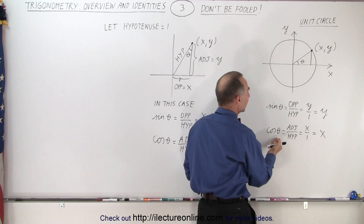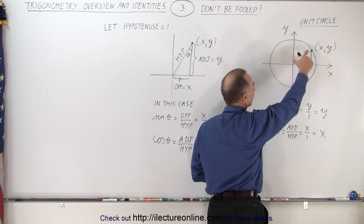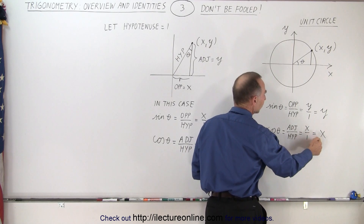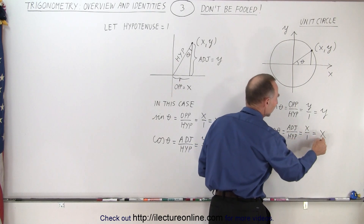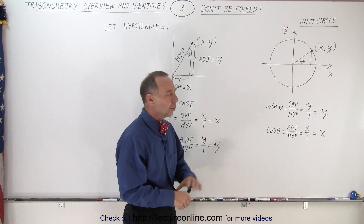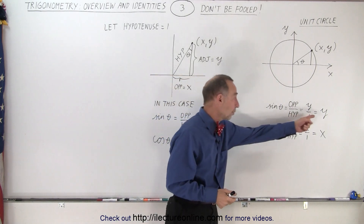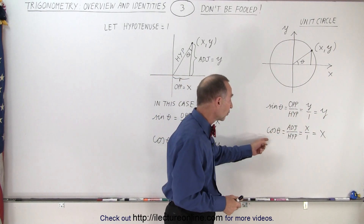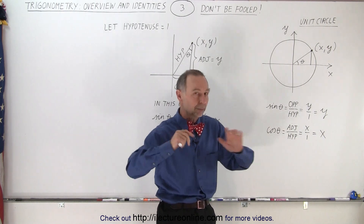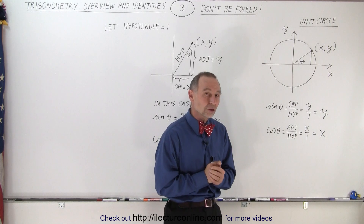The cosine of theta is the ratio of the adjacent side divided by the hypotenuse, so therefore it's x over 1, and the cosine of theta equals the value of x at that point on the line. So we're under the impression that whenever we deal with the sine, we always talk about the y value of the point, and the cosine always the x value — and that's true for the unit circle, always 100% of the time. But we're not always dealing with the unit circle.